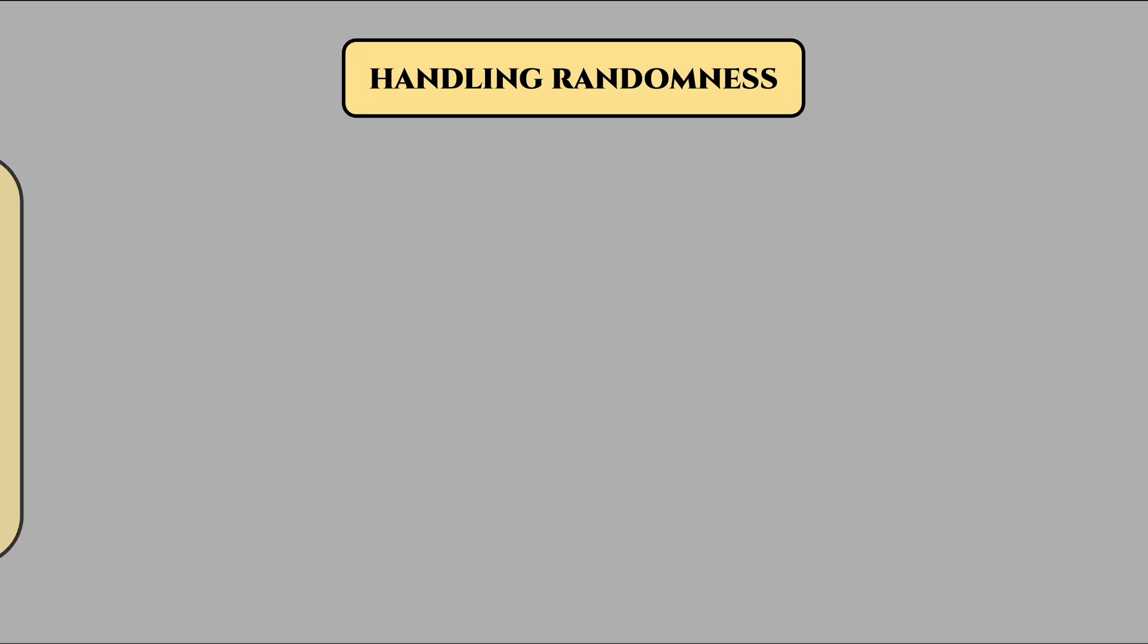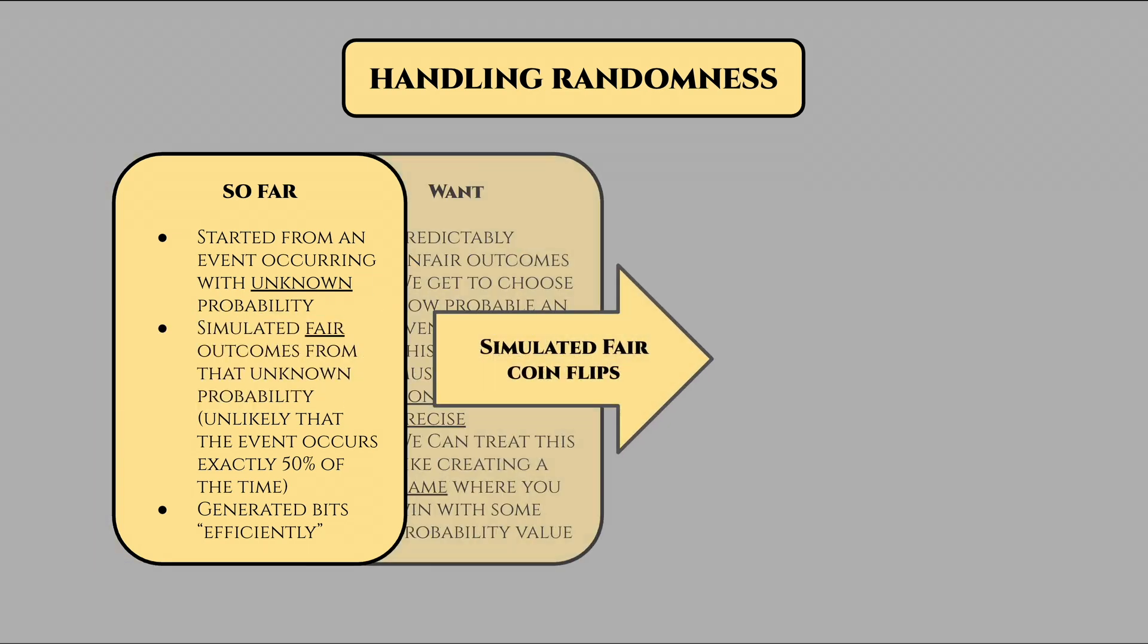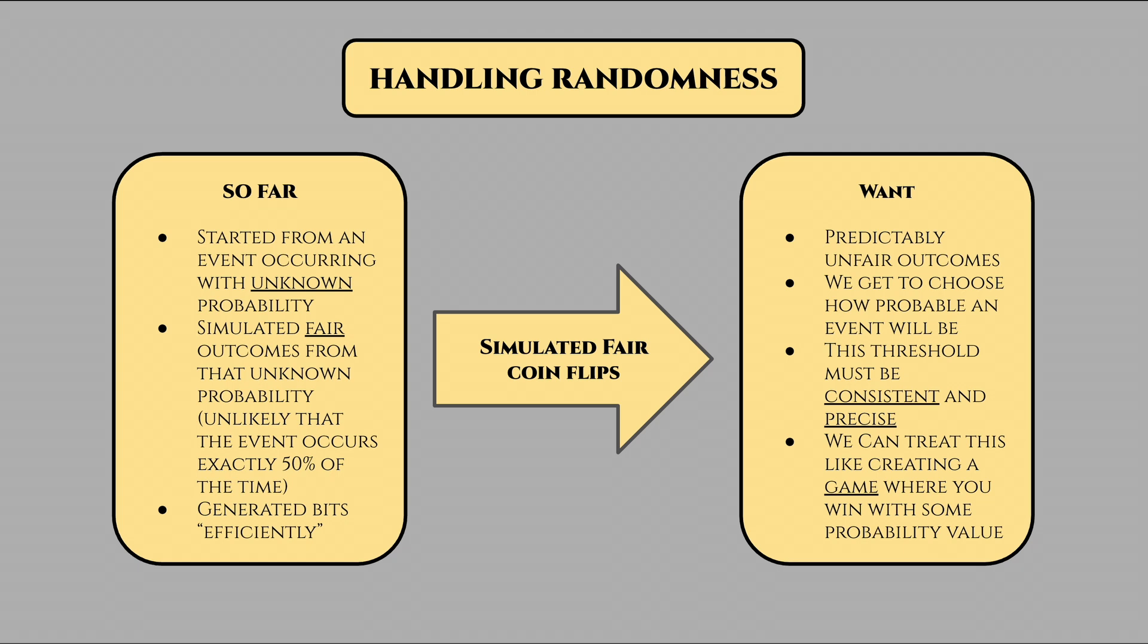But real computers also have to simulate randomness too. From chatbots to cryptography and security to simulations to gaming, it would be really nice if our computer could handle the necessity for randomness. We've developed the ability to generate fair outcomes, so how can we use this to then generate predictably unfair outcomes? Following our previous abstractions, we can rephrase this question as follows. Given a fair coin, how can we generate a game scenario where the game wins with probability p? Mind you, this value of p has to be exact. It's very easy to approximate a solution, but remember, we're pretending like we're the first computer scientists here. If these computers we make for the future have faulty approximations, that opens up a world of backdoors into national secrets, confidential finances, and military technologies.